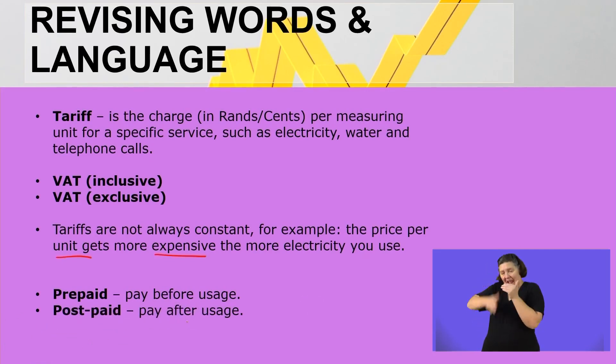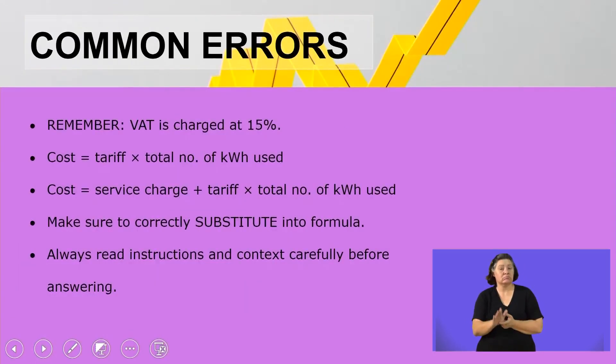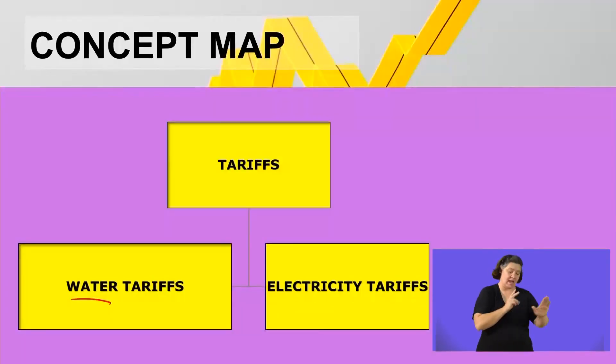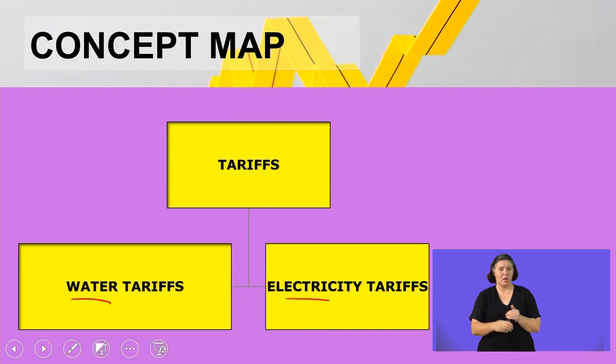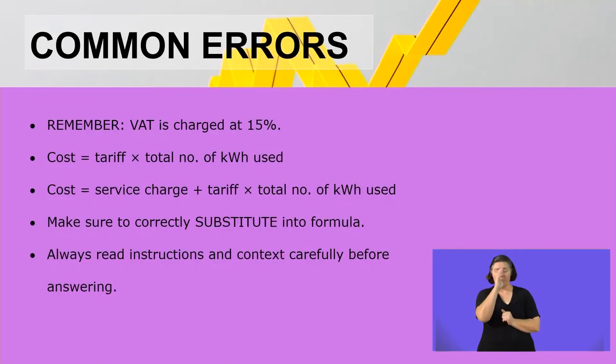We also indicated that we have a system called prepaid, where we pay before we use, and then the opposite of it is postpaid, where we pay after our usage. Then we indicated that our lesson today is based on tariffs, but more specifically we looked at water tariffs and electricity tariffs. What else do I want you to keep in mind? Some common errors or things to keep in mind when you do calculations.